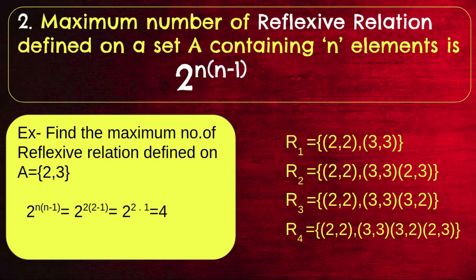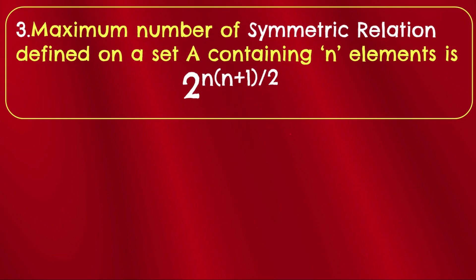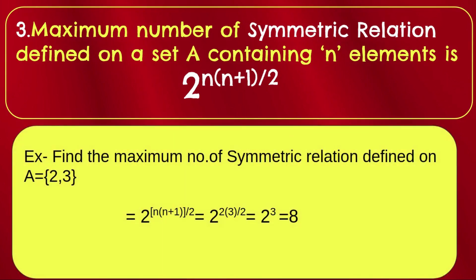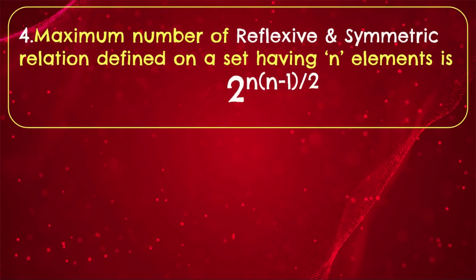The maximum number of symmetric relations defined on a set A containing N elements is 2 raised to N(N+1)/2. For example when N=2: 2 raised to 2×3/2 = 2 raised to 3 = 8. Remember the result: the maximum number of symmetric relations is 2 raised to N(N+1)/2.